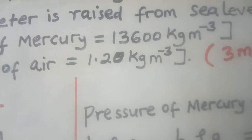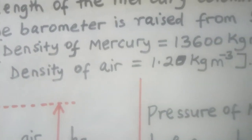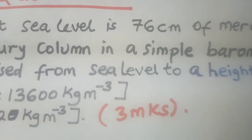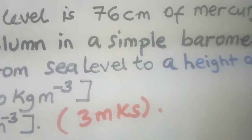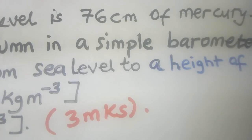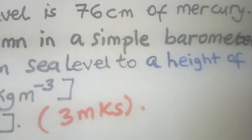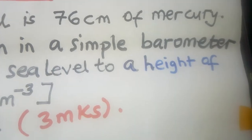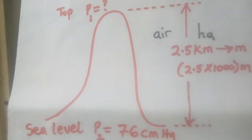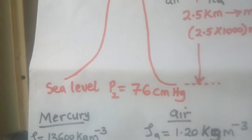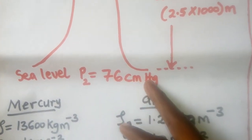The densities are in SI units, so the pressure should also be in SI units — newtons per meter squared. At sea level the pressure is 76 centimeters of mercury. To convert to SI units, we use the formula pressure equals H rho g: height times density times acceleration due to gravity. We can represent this with a diagram: at sea level the pressure was 76 centimeters of mercury, and the barometer is raised to 2.5 kilometers.